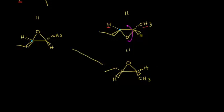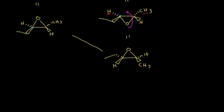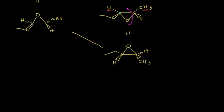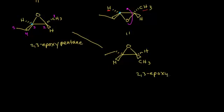Let's name these two molecules. I need to find my longest carbon chain and give the epoxy substituent the lowest number possible. Numbering the chain, carbon one, two, three, four, five — so it's a pentane base. I can see my epoxy occurs between carbons two and three, so it would be 2,3-epoxypentane. Both enantiomers share the base name 2,3-epoxypentane; now I have to think about the stereochemistry at carbons two and three.